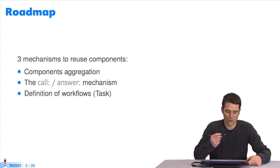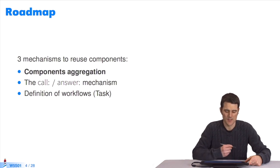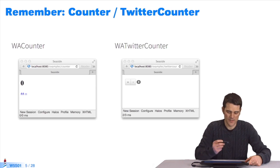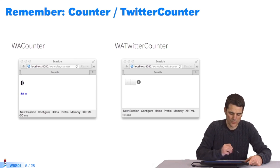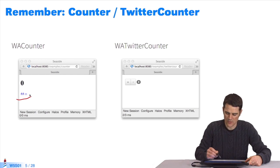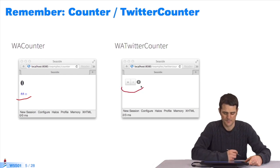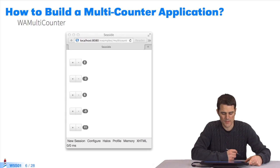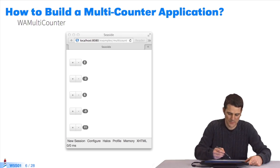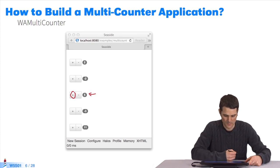We'll go back over three important mechanisms for composing components in Seaside. The first is component aggregation. Remember, we defined two counters, one normal counter and a Twitter counter. How can I now aggregate components to build a multi-counter application? I want to show lots of counters on one page. When I click on this plus, for example, it only increases the value of this particular counter. So, aggregating lots of components on the same page easily.